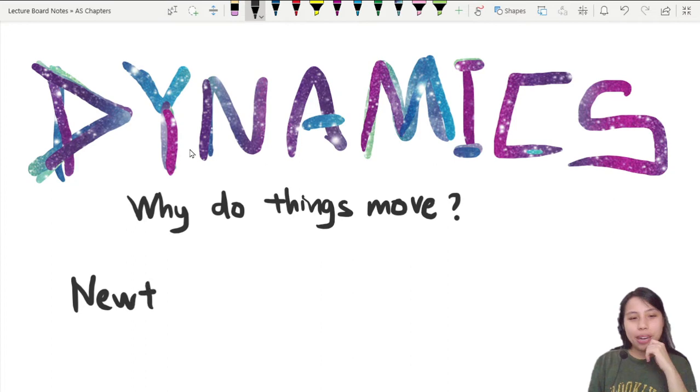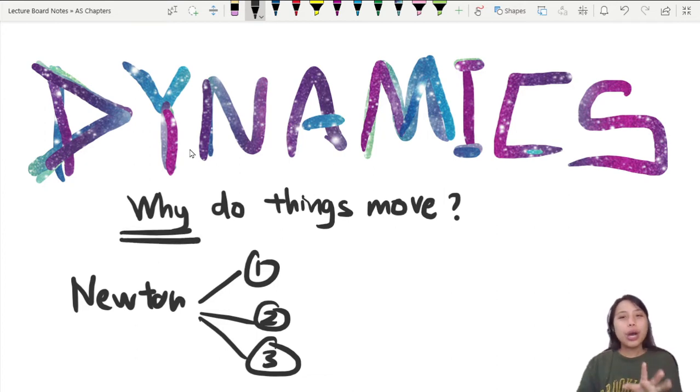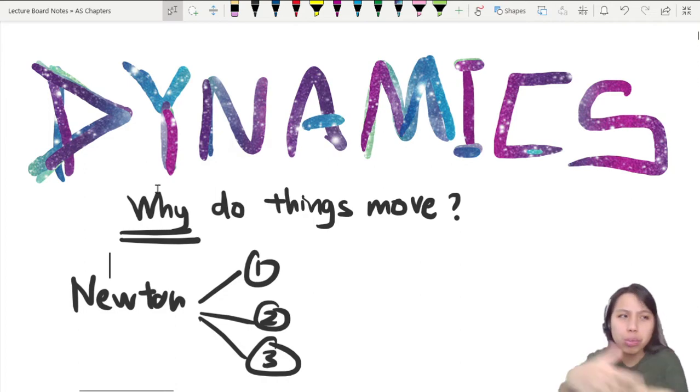These ideas come from this guy called Newton. Newton came up with three laws: law number one, number two, and number three. Using these three laws, we're going to answer the question why do things move or not move or move in a different way.